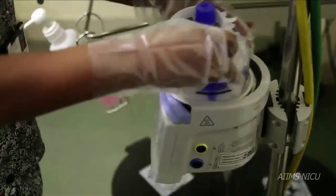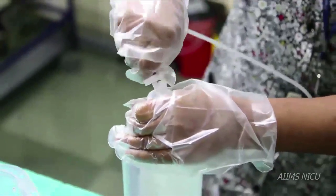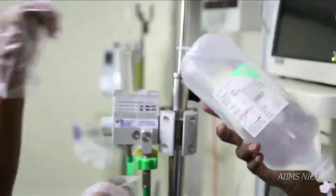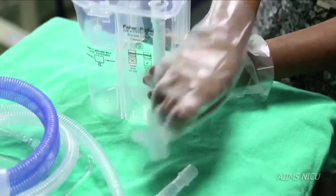Fix the water chamber onto the servo humidifier and fill it with distilled water. Use the autofill option of fixing the distilled water bottle to a stand for filling the water chamber.